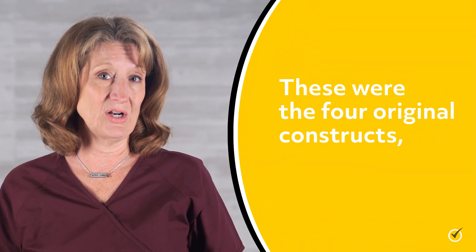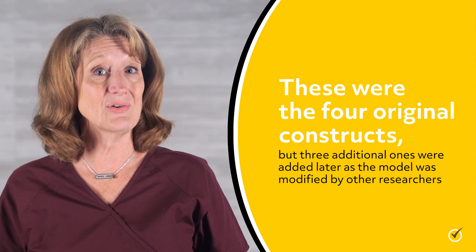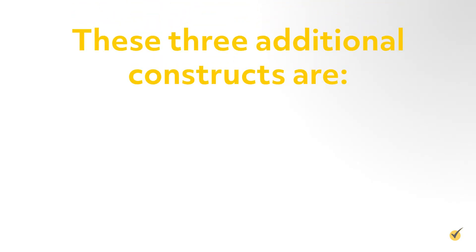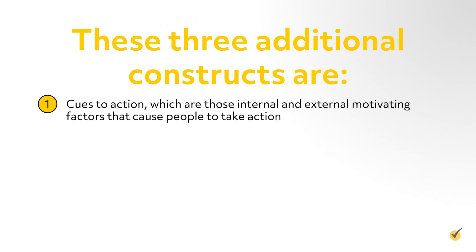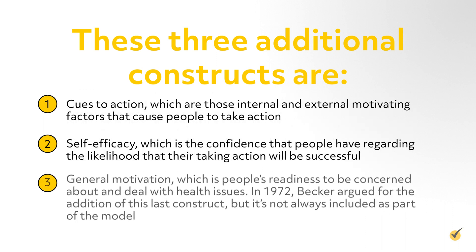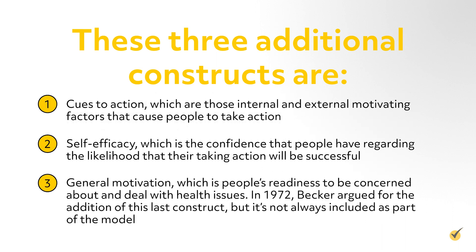These were the four original constructs, but three additional ones were added later as the model was modified by other researchers. These three additional constructs are cues to action, which are those internal and external motivating factors that cause people to take action; self-efficacy, which is the confidence that people have regarding the likelihood that their taking action will be successful; and general motivation, which is people's readiness to be concerned about and deal with health issues. In 1972, Becker argued for the addition of this last construct, but it's not always included as part of the model.